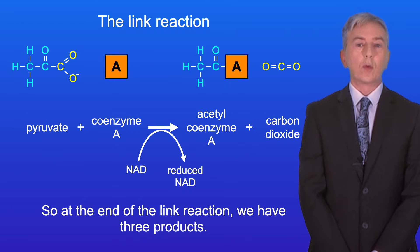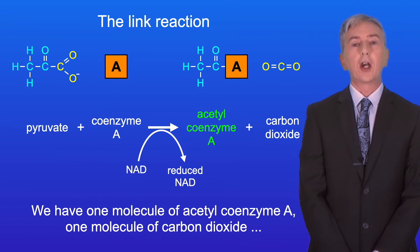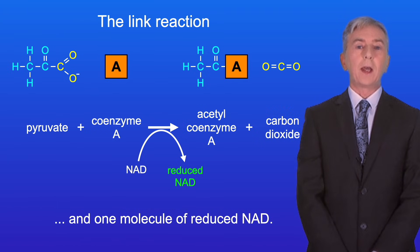So at the end of the link reaction, we've got three products. We have one molecule of acetyl coenzyme A, one molecule of carbon dioxide, and one molecule of reduced NAD.